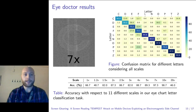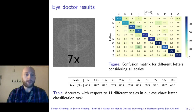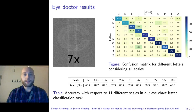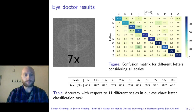However, we can notice that not all scales give the same accuracy for recognition. The lower scales, below 1.5, have a drop in accuracy. This is probably due to the loss of information. So, given default font size on a smartphone, would deep learning be enough to extract a 6-digit code embedded in a text message?